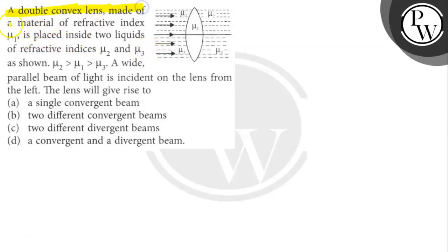a double convex lens made of a material of refractive index mu1 is placed inside two liquids of refractive indices mu2 and mu3 as shown, where mu2 is greater than mu1 and mu1 is greater than mu3. A wide parallel beam of light is incident on the lens from the left.